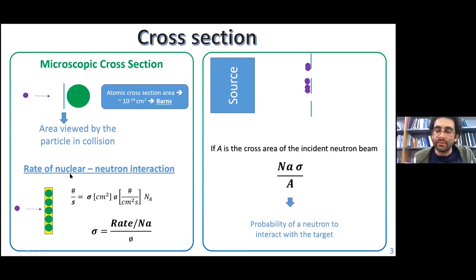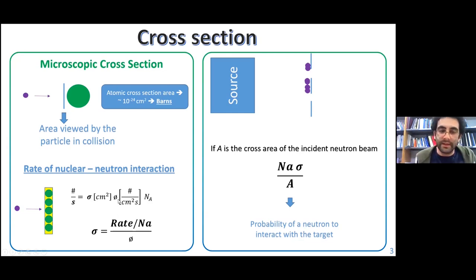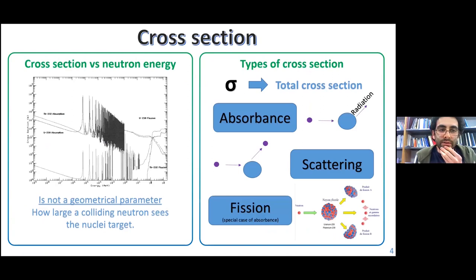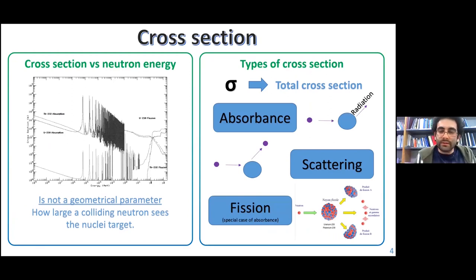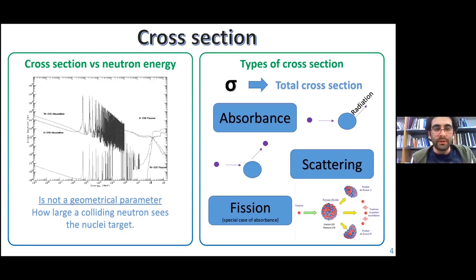Let's move to the rate of nuclear neutron interaction: how many interactions per second? That is equal to the cross section (the area, for example the wall) times the flux — how many beads are coming out from the source per unit area — times the number of atoms (number of walls in our case). The microscopic cross section is not actually a geometrical parameter. We have the cross section over the energy of the neutron. Since the cross section describes how large a colliding neutron sees the nuclei target, this depends on the energy — so the speed — of the neutron. We can see in this graph that it is varying over the energy of the neutron.